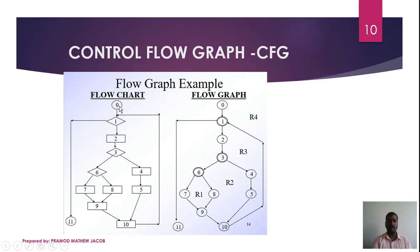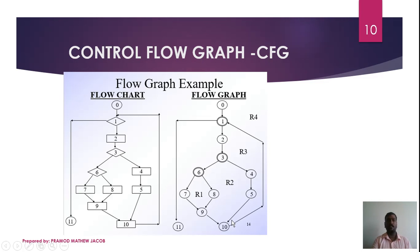In the flow chart, each node represents a single statement or condition. Node 1 is a condition, so we have a predicate node. Node 2 is a normal statement, so we have a symbol node. Node 3 is a condition statement, so we have a predicate node shown as a double-ended circle. Node 6 is also a condition statement, giving a predicate node.